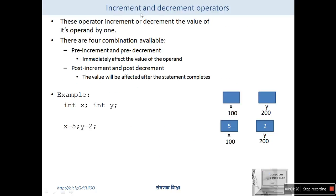Now let's discuss increment and decrement operators. These operators increment or decrement the value of any operand by one. We have four combinations: pre-increment, pre-decrement, post-increment, and post-decrement. Pre-increment and pre-decrement immediately affect the value of the operand on which they are applied.